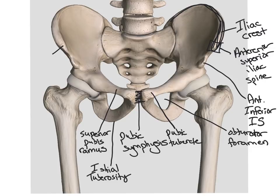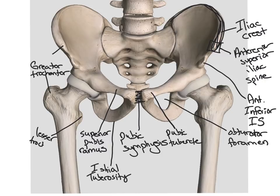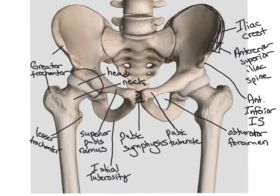Looking at the femur, we have two main prominences: the greater trochanter and the lesser trochanter. We also have the head of the femur, or femoral head, and the femoral neck. Both of those sit in the acetabulum on the ilium. The area of the acetabulum shown on the front and outside of the femur is called the acetabular rim, and the socket the femur fits into is called the acetabulum or acetabular fossa.